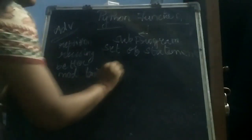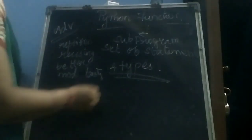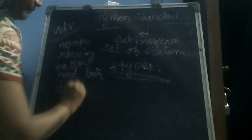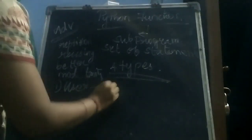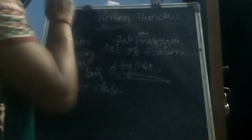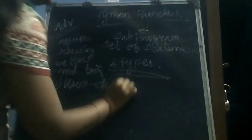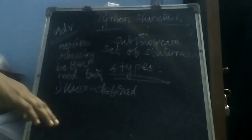There are four different types of functions. The first one is a user-defined function. We are the users — we are the programmers — and we are going to create a function; that is a user-defined function.